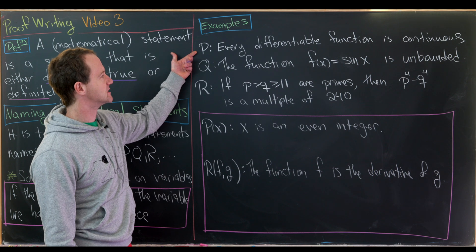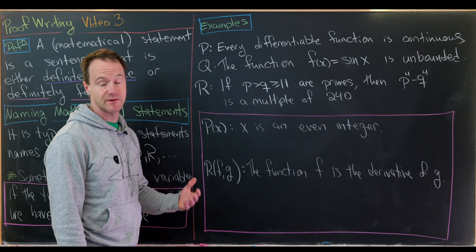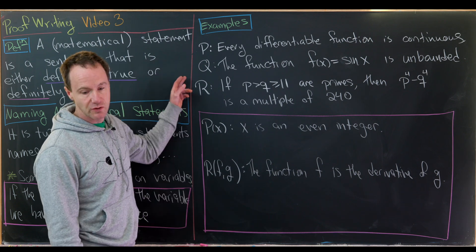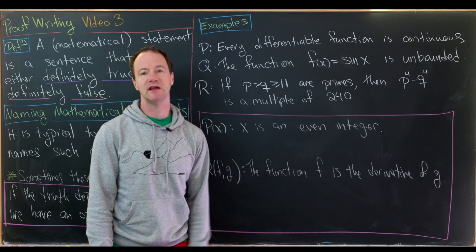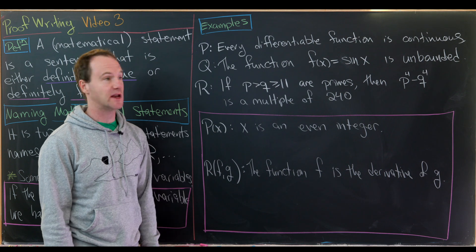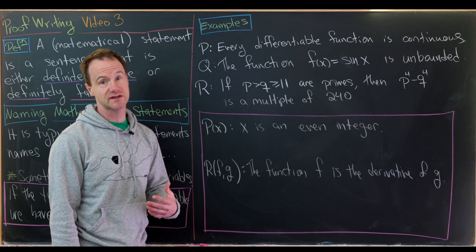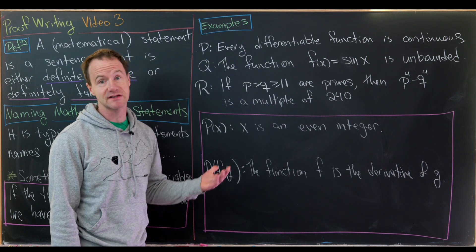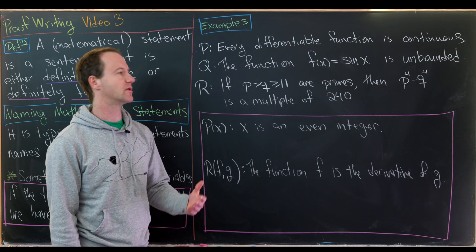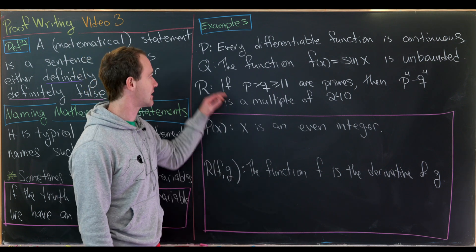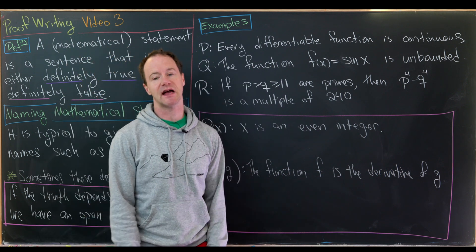Now, p is most definitely true — in calculus you learn that if a function is differentiable then it's continuous. As for q, this is where context matters. If x is a real number, then q is false because sin x is bounded between −1 and 1. But if x is allowed to be a complex number, then sin x is actually unbounded and q is true. So the truth of q depends on the context.